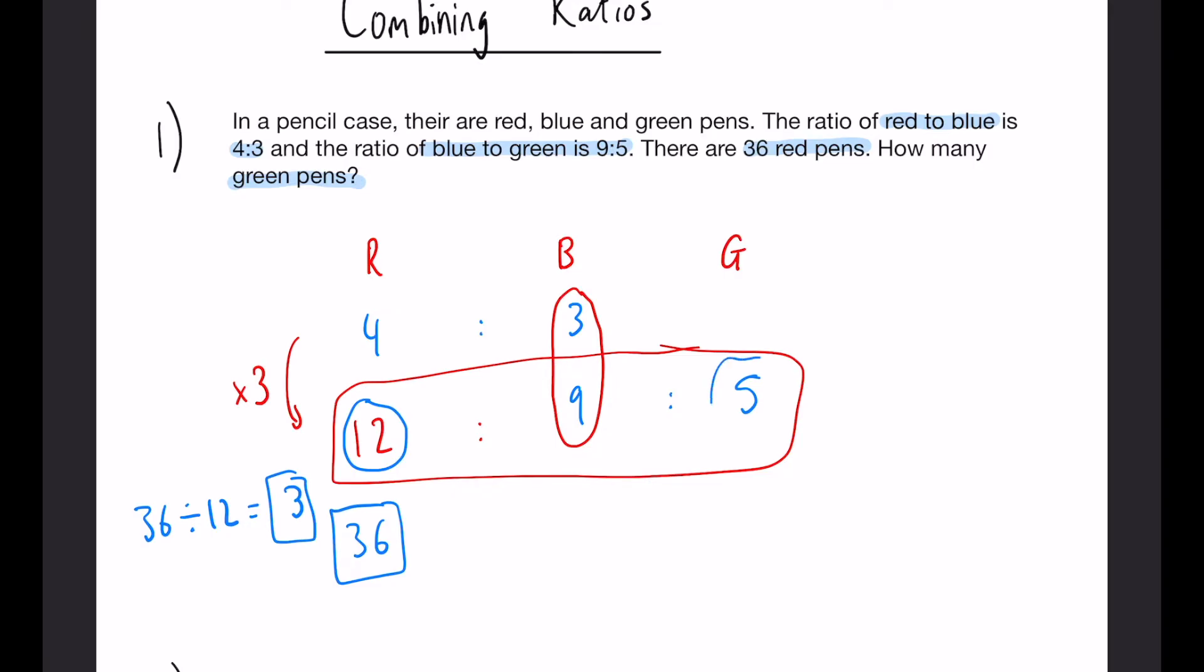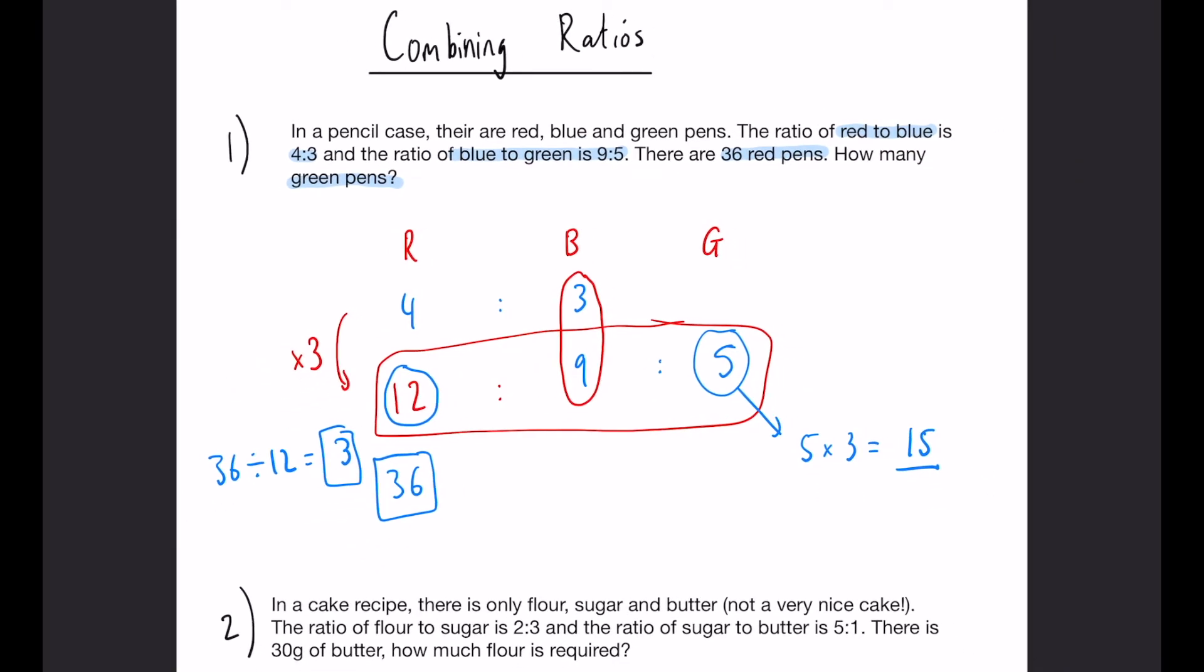That means if we have a look over here, 5 of those buckets are going to be 5 multiplied by 3, giving us 15 green pens. And that is question 1 done.